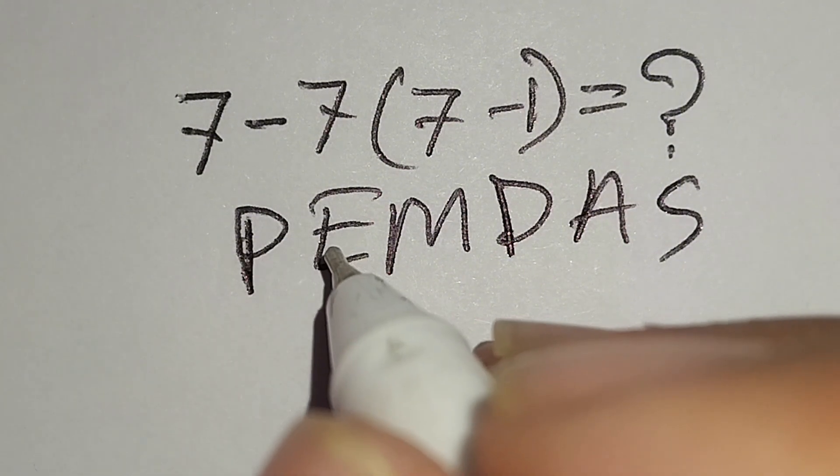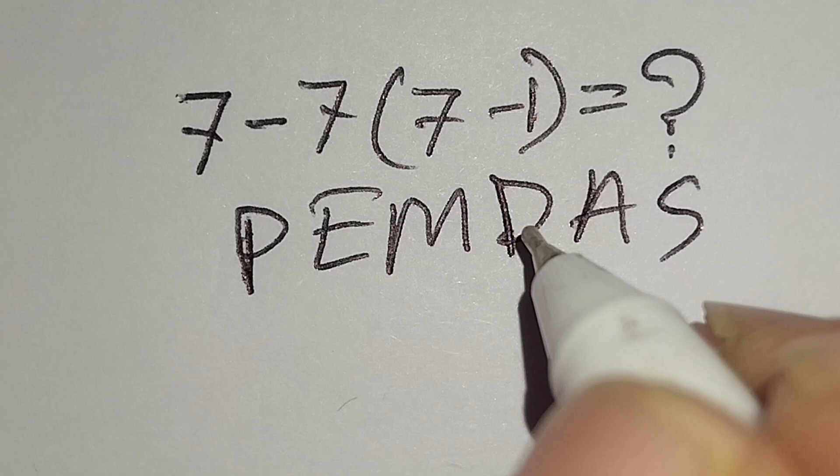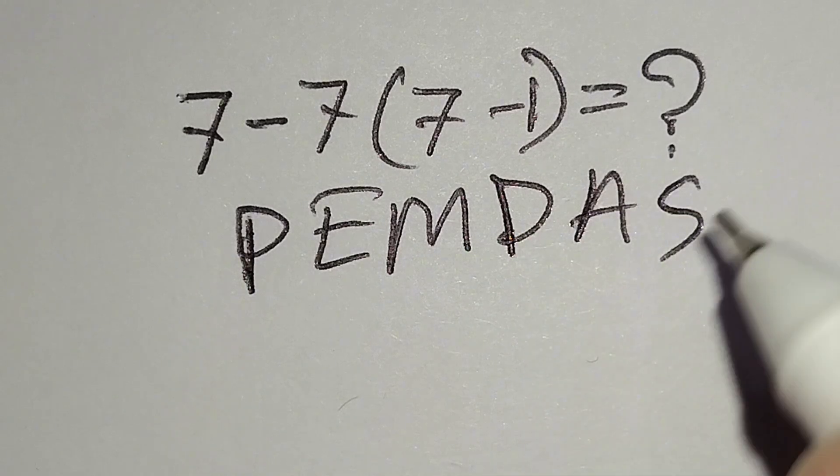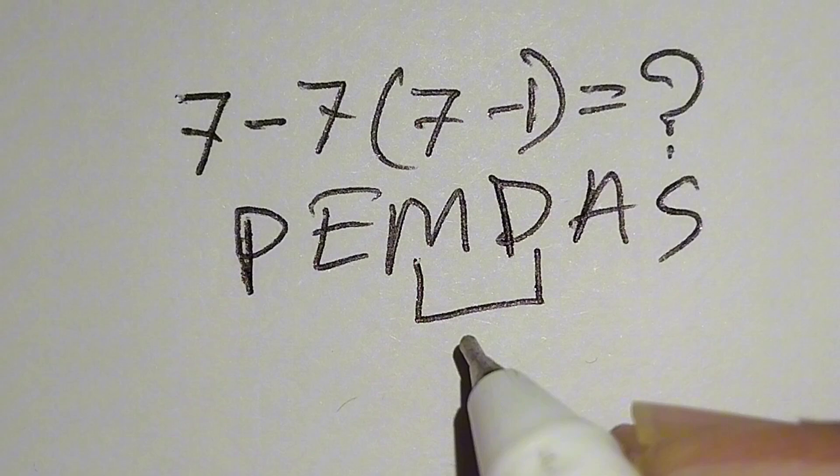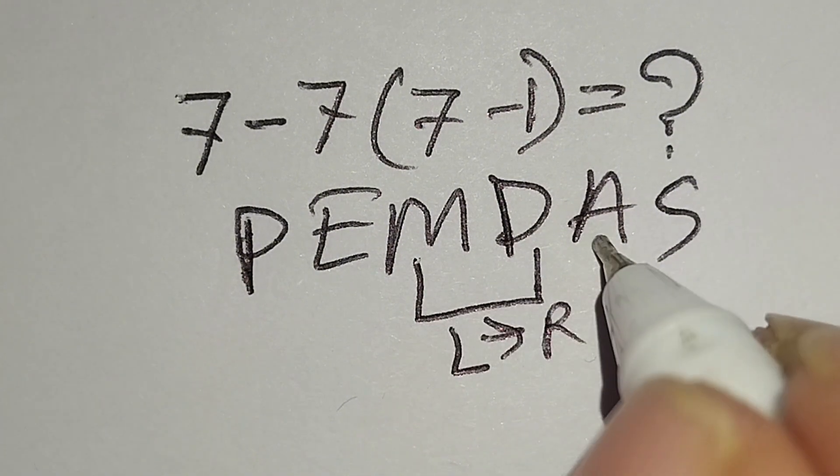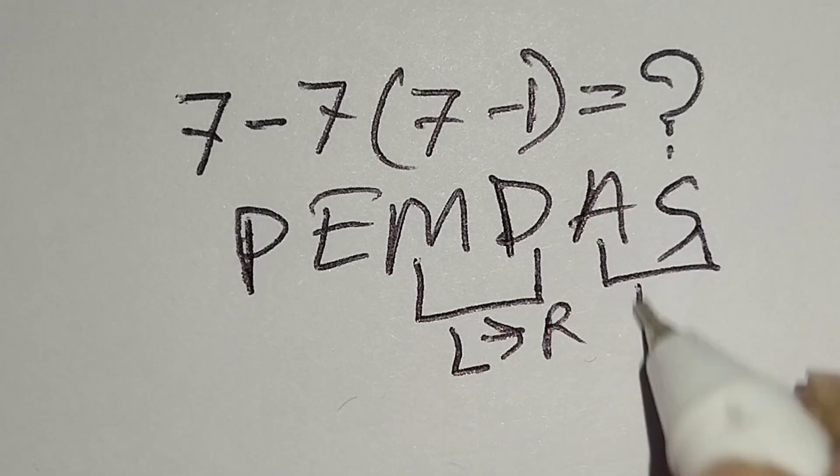Remember, multiplication and division have same priority, for this we have to work left to right. And addition and subtraction have same priority, for this we have to work left to right also.